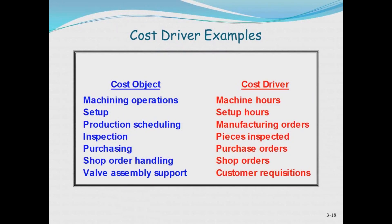Some examples of cost objects and drivers: machine operations, setup, production schedule, and others. If you want to understand how much it costs for machine operations, you may look at machine hours — how many hours has that machine been running. Setup is how long it took to set up a batch or a run. Inspection could be driven by the number of pieces you're inspecting. A cost driver is some kind of quantifiable measure of your cost object.